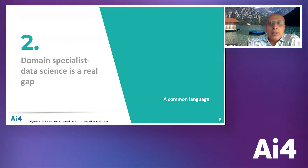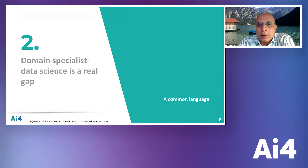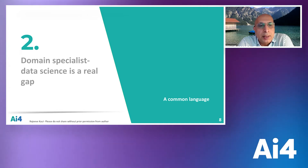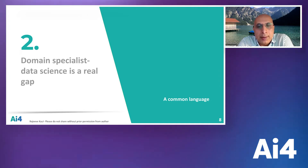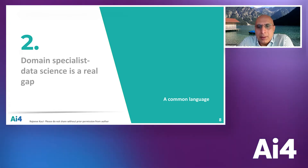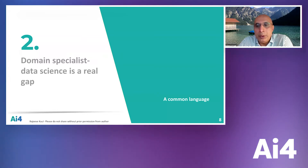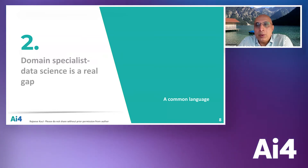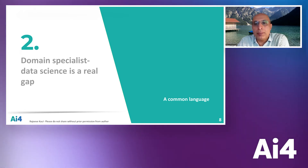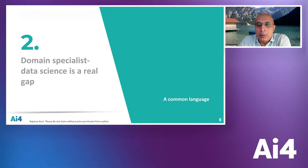Let's talk about a second piece of making AI real. I call this the domain specialist–data science gap, and it's a real gap — in terms of a common language, a common understanding, a common view — which leads to a gap in a common approach over time. Let me illustrate this with a couple of Dilbert cartoons and then dive into a little more detail.